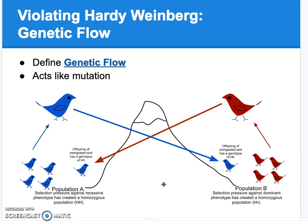That's it for now. We're going to talk about human evolution on Monday in class. Those are the five allele frequency changers in populations, and the Hardy-Weinberg principle assumes that none of those are present. I hope that was helpful.